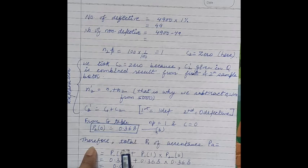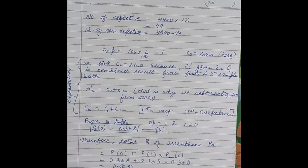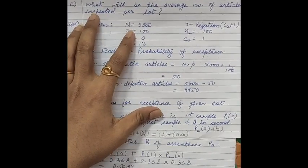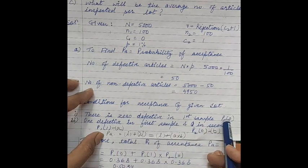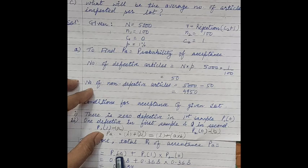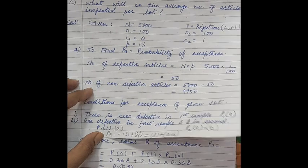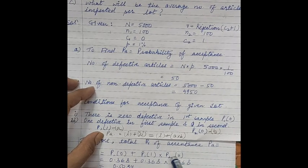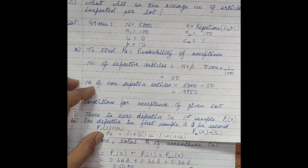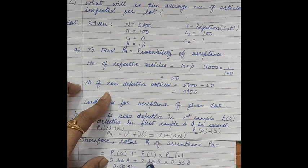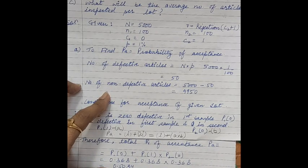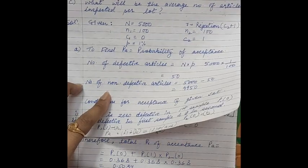Now we calculate the total probability of acceptance by combining both conditions. The first condition contributes the probability of 0 defectives in the first sample. The second condition contributes the probability of exactly 1 defective in the first sample multiplied by the probability of 0 defectives in the second sample. Substituting the numerical values gives us the total probability of acceptance PA = 0.5034.